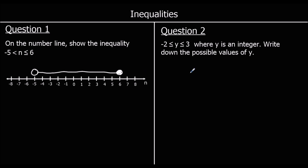Question 2: y is bigger than or equal to negative 2 and less than or equal to 3. So in between negative 2 and 3, it can equal negative 2 and it can equal 3. So what are the integer values that y could be? Starting with negative 2, then negative 1, 0, 1, 2, and 3. Those are all the options.